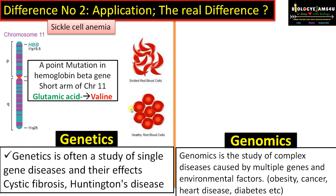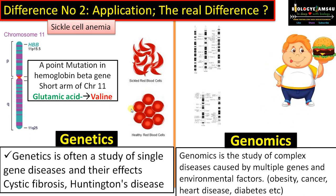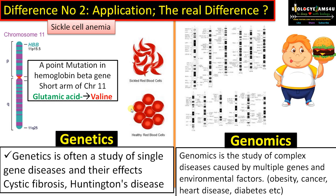Whereas genomics is a study of complex diseases caused by multiple genes and environmental factors — like obesity, cancer, heart diseases, diabetes, etc. This is a genome map of genes associated with obesity. Genomics is focused on the gene interactions happening within these known genes.